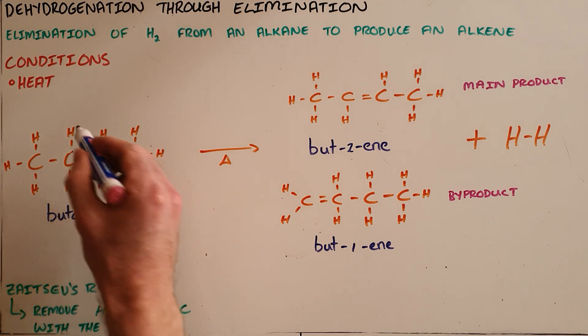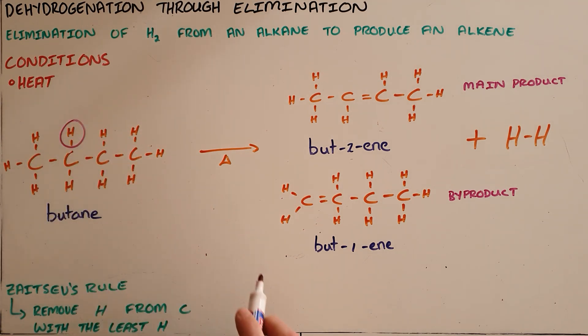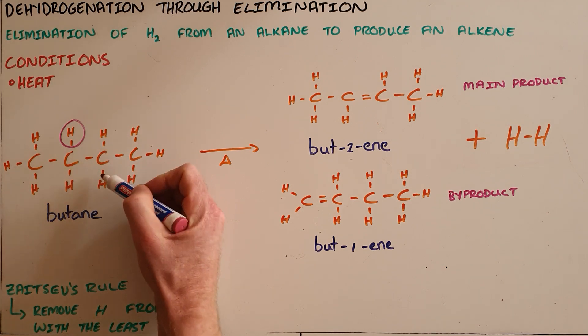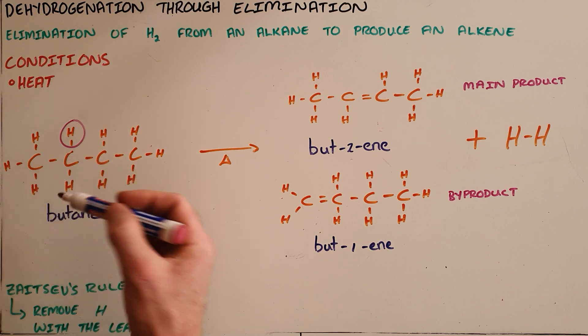In this case, that's the second carbon. We remove our first hydrogen, and then we can see on the third carbon there are also only two hydrogens, whereas on the first carbon there are three hydrogens.